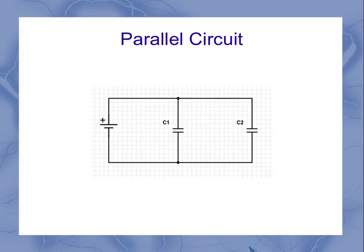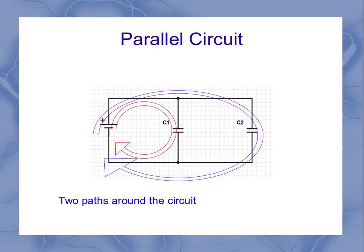Now we get to a parallel circuit. The key point in a parallel circuit is that there are two or more paths around the circuit. In this case, one path goes through capacitor 1, and one path goes through capacitor 2.